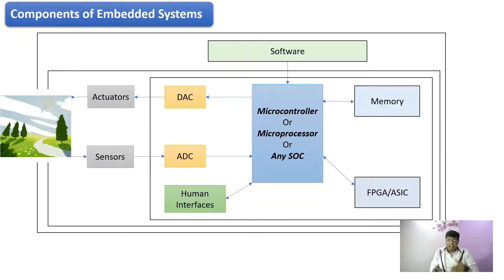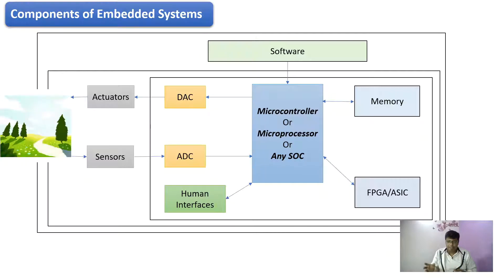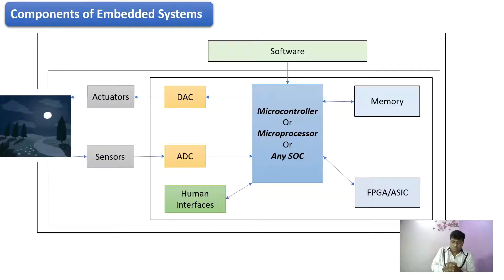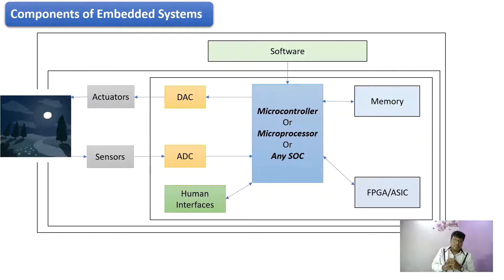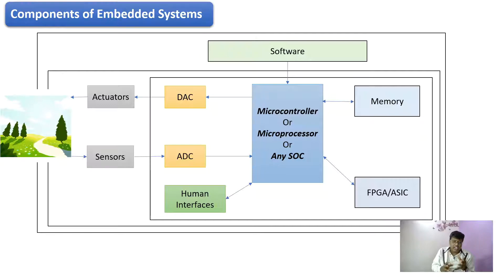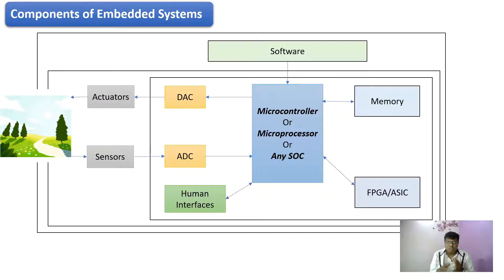Another component is memory. We can have external EEPROM — electrically erasable programmable read-only memory — which can be externally interfaced if additional memory is required. As mentioned with S3 systems, we may also have additional coprocessors for very high computation power. We also have a human-machine interface, which provides user interfaces for humans to interact with the embedded system, such as a graphical user interface. These are the basic fundamental components of any embedded system.